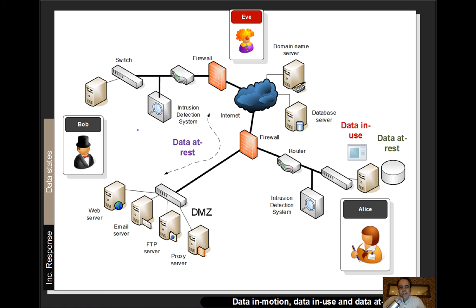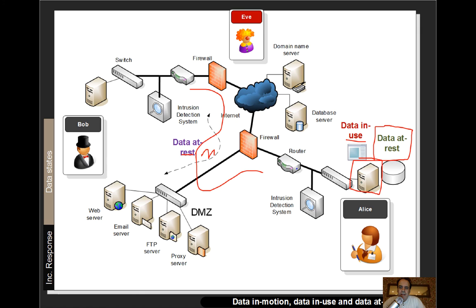The three states we look to detect an intrusion are data at rest, data in motion, and data in use. Data in motion is the network traffic flowing across the network. Data in use is the data held inside processes — memory, processor, and so on. Data at rest is the data stored on disk systems. We have complex network infrastructure with firewalls, routers, and intrusion detection systems, plus servers in a demilitarized zone, domain name servers, and databases — each holding fragments of information to build a timeline.